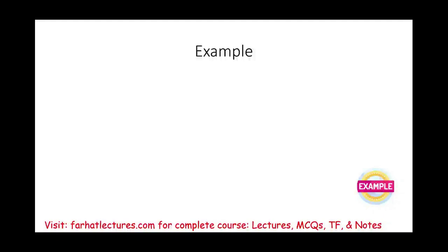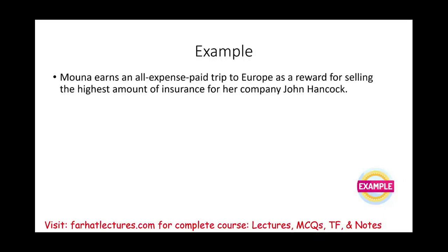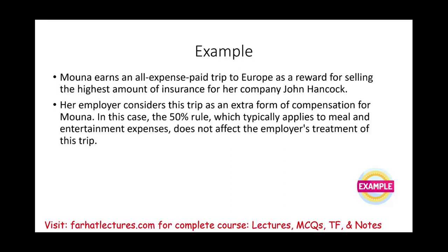For example, Mona earns an all-expense-paid trip to Europe as a reward for selling the highest insurance for her company, John Hancock. Her employer considered this trip as an extra form of compensation. In this case, she's going to incur meals and entertainment. The 50% rule does not apply because it's a form of compensation — they're paying her.